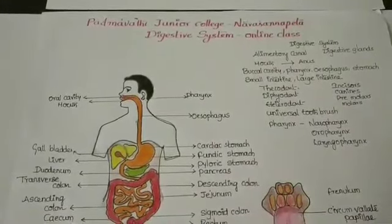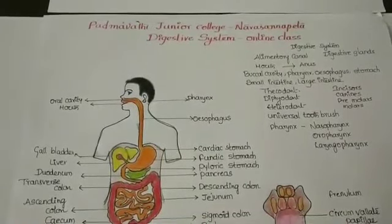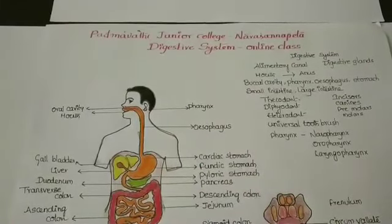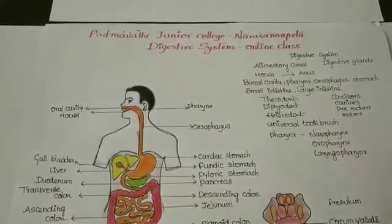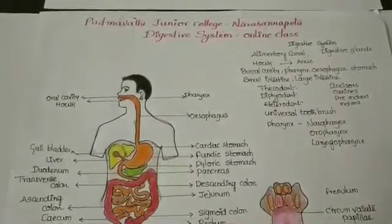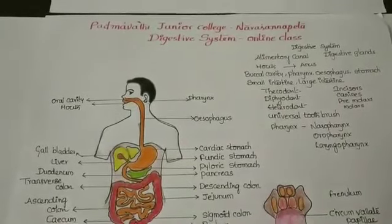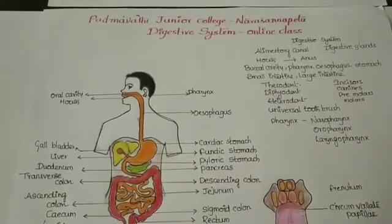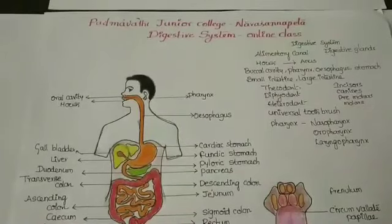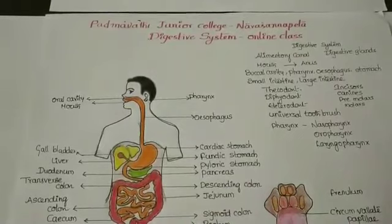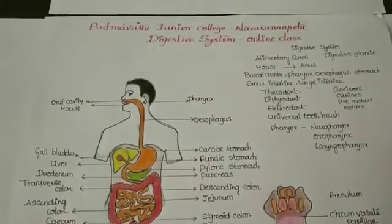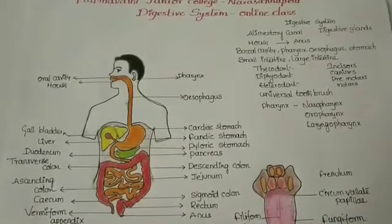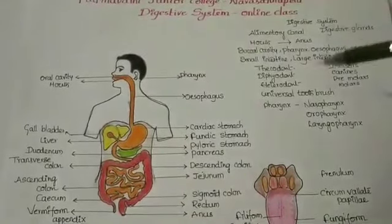Majority of mammals, including human beings, form two sets of teeth during their lifetime: a set of milk teeth and a set of permanent teeth. This type of dentition is called diphyodont dentition. An adult human being has 32 permanent teeth, which are of four types: incisors, canines, premolars, and molars. Such type of dentition is called heterodont dentition.